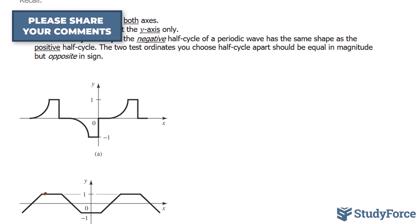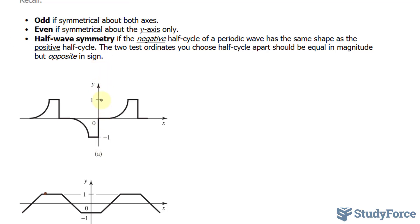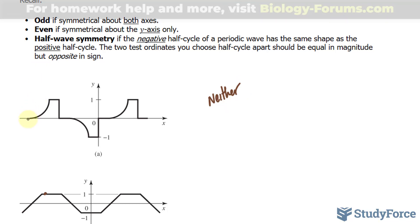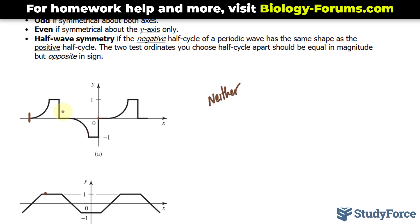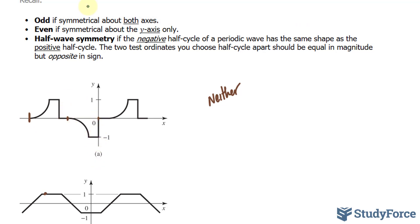For the first waveform, reflecting along the y-axis would not produce an identical result, and reflecting about both axes also wouldn't match. So this is neither odd nor even. To test for half-wave symmetry, we define the cycle boundaries. Selecting a point along the negative part with a y-coordinate of negative 1, half a cycle away gives a y-coordinate of positive 1. Same magnitude, opposite signs — so yes, this waveform has half-wave symmetry.